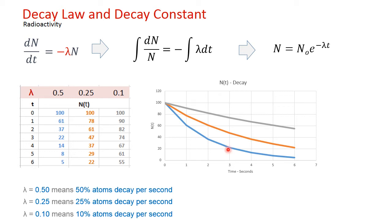One question that may come up is, when we say lambda as 50 percent atoms decay per second, why are we not seeing a 50 percent decay here after one second?